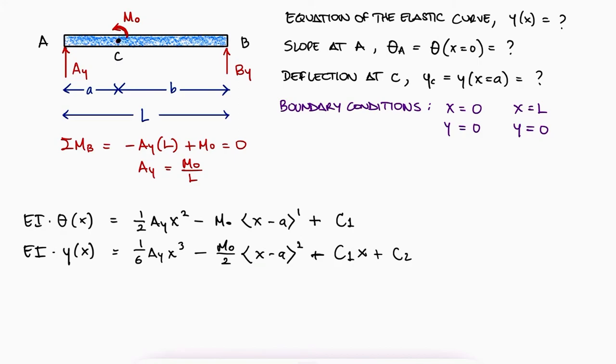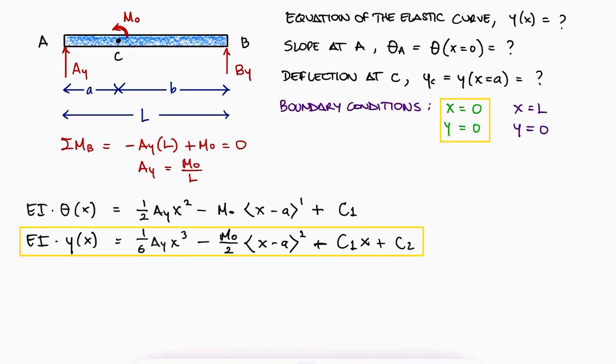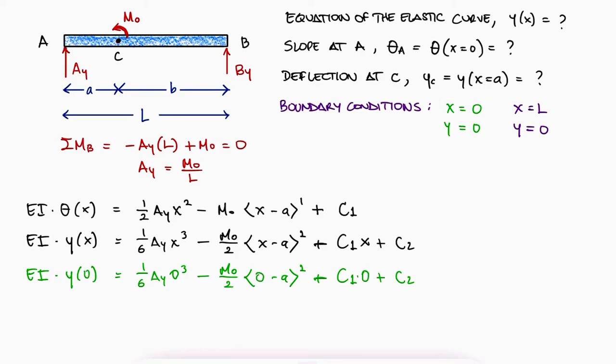Using the first boundary condition, which means using the last equation with x equal to 0 and y of x equal to 0, we see that all terms are 0, including the bracket with the negative value within it, which is a 0, and therefore C2 is equal to 0.